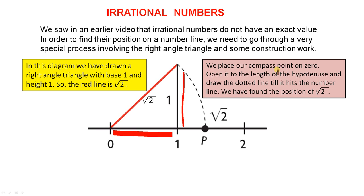We place our compass point on zero. Open it to the length of the hypotenuse and draw the dotted line till it hits the number line. So with the point on zero, open the compass to this length, draw this dotted line here and here it is. This point P is the square root of two. We have found its position.